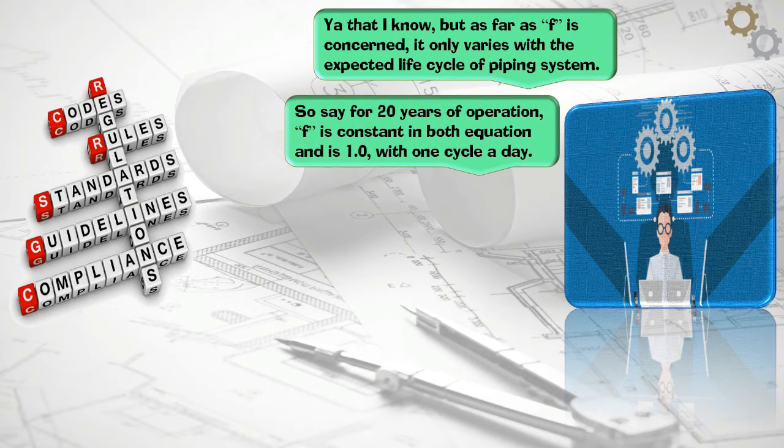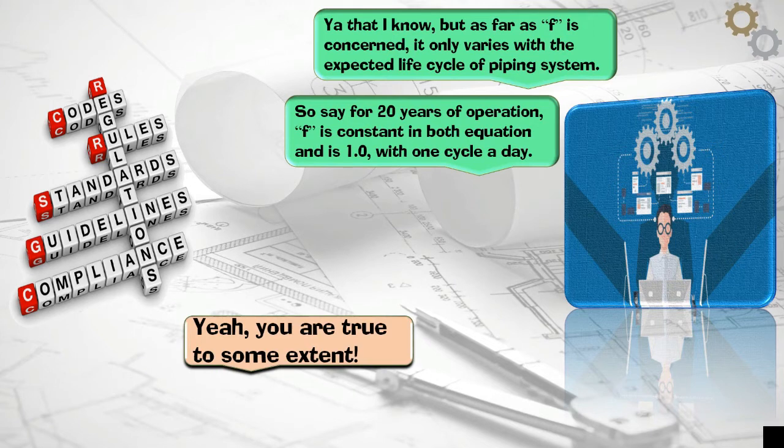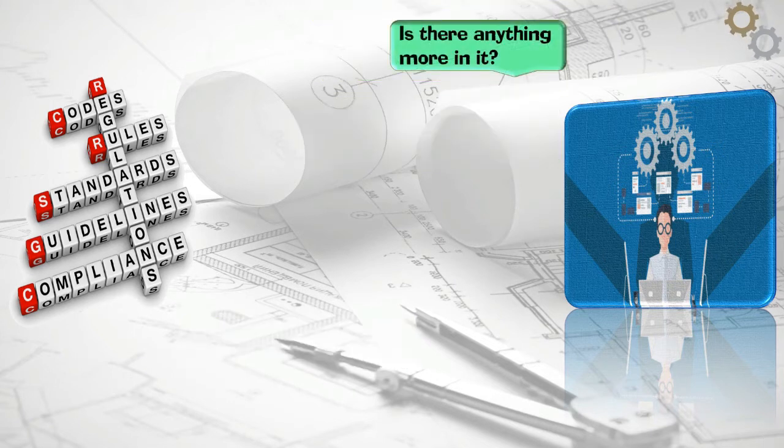So say for 20 years of operation, F is constant in both equations and is 1.0, with one cycle a day. Yeah, you are true to some extent. Is there anything more in it?